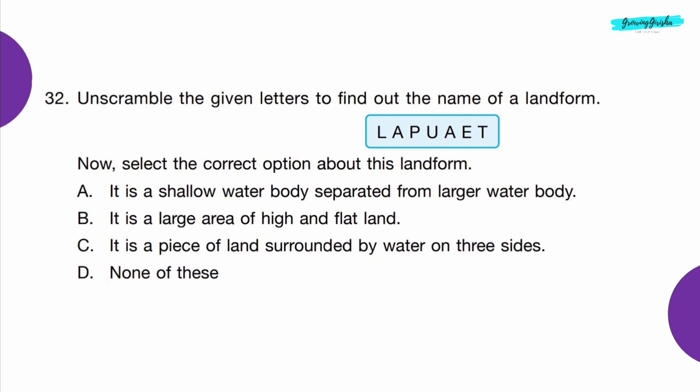Question 32: Unscramble the given letters to find out the name of a landform, then select the correct option about this landform. When we unscramble the letters, we get the word plateau. So Option B — It is a large area of high and flat land.